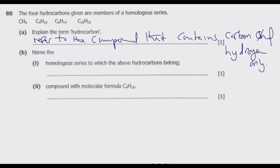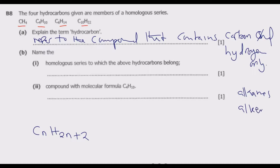Question B1 asks us to name the homologous series to which the above hydrocarbons belong. Question B2 gives a compound with the molecular formula C4H10. Now, when dealing with hydrocarbons, there are only two types: either they are alkanes or alkenes. Alkenes have the generic formula CnH(2n), while alkanes have the formula CnH(2n+2).